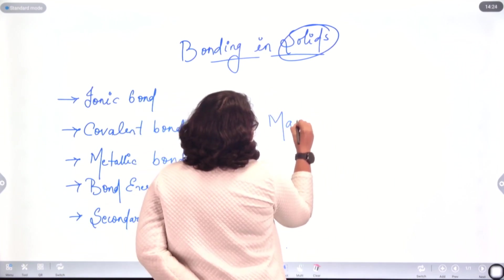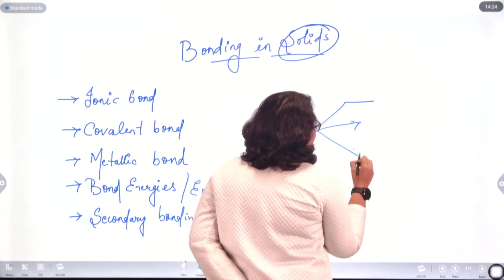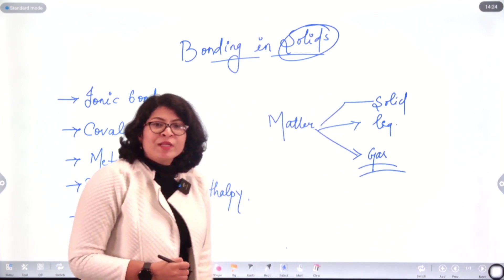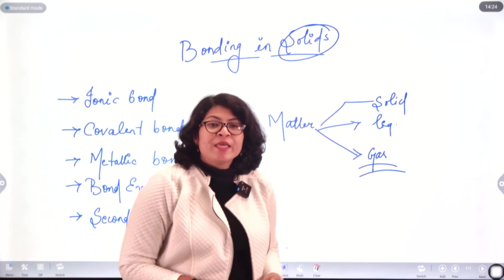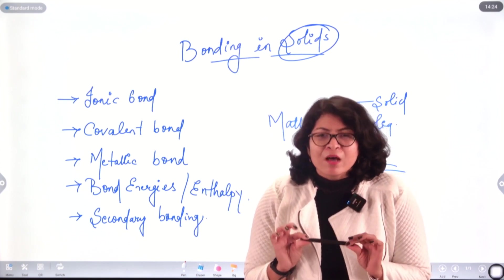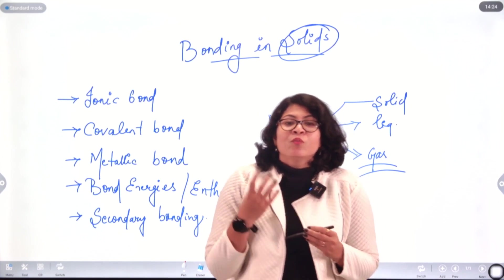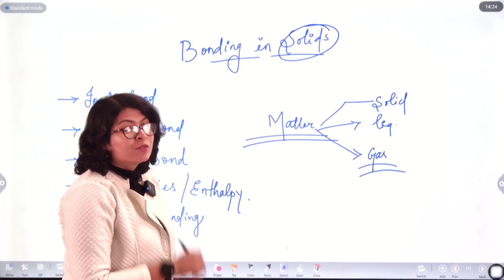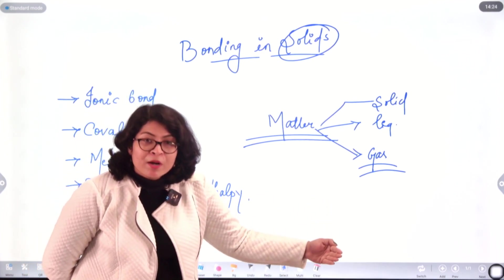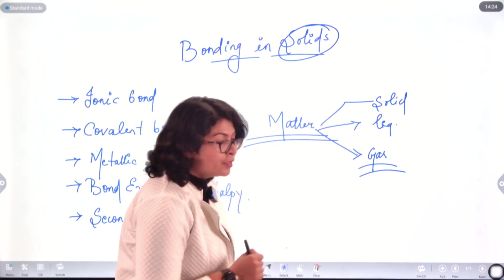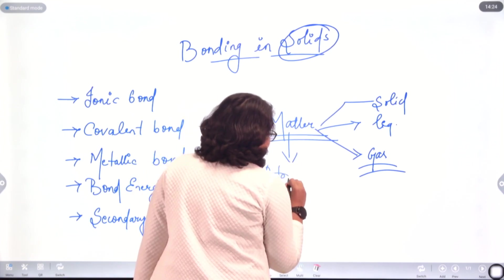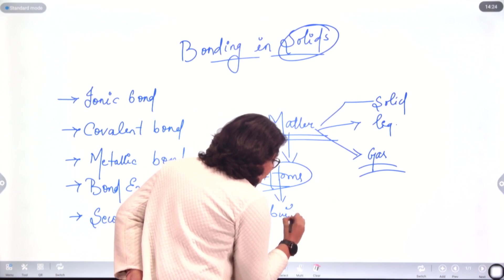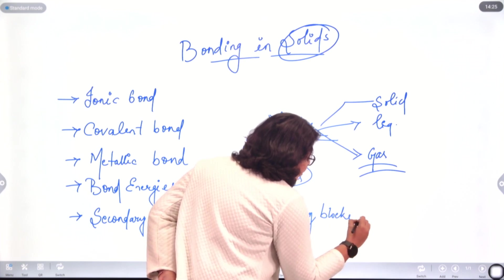Matter can be classified into three different types: solid, liquid, and gas. Now on what basis are we classifying matter into these three categories? Whenever I say solid, the first thing that comes to your mind is something that is very hard, incompressible, or which cannot be broken down. So what makes that solid so hard and incompressible? To know that, let us see what matter is exactly made up of. If we further break matter into smaller particles, we will reach the origin of it, and that is the atom. All matter is made up of atoms — atoms are the building blocks of matter.